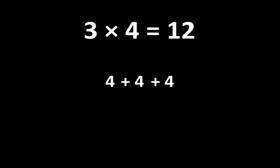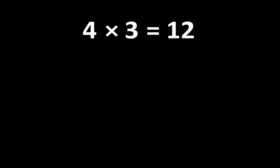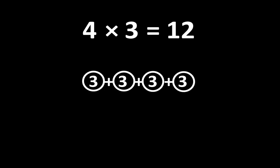You may recognize this as repeated addition. If we count the groups of 4, we can see that there are 1, 2, 3 groups of 4, and the total of 3 groups of 4 is 12. If 3 times 4 is equal to 12, we also know that 4 times 3 is equal to 12, so we can think of 12 as 4 groups of 3. If we count the groups of 3, there are 1, 2, 3, 4 groups of 3, which is equal to 12.